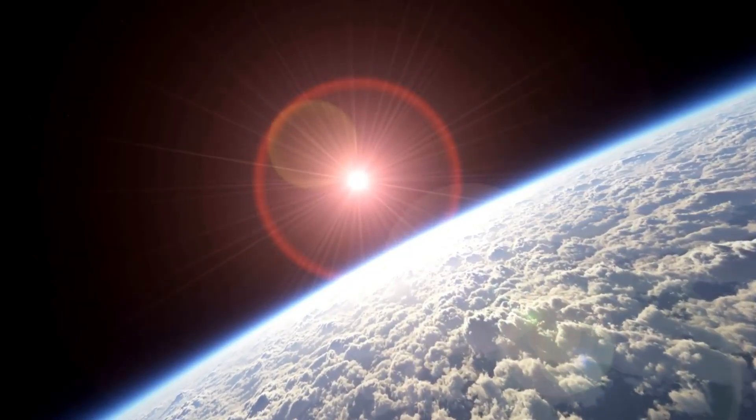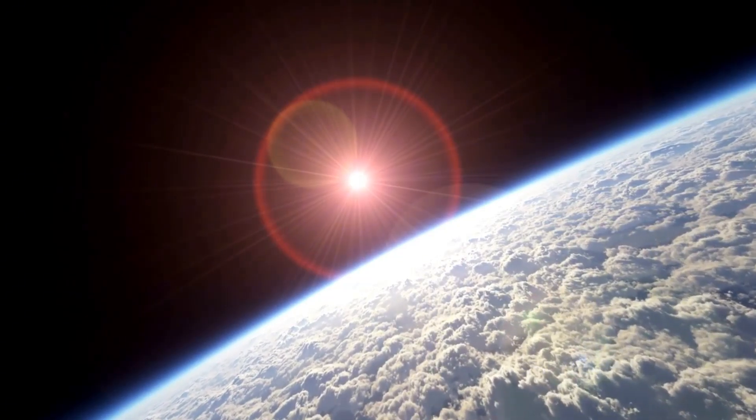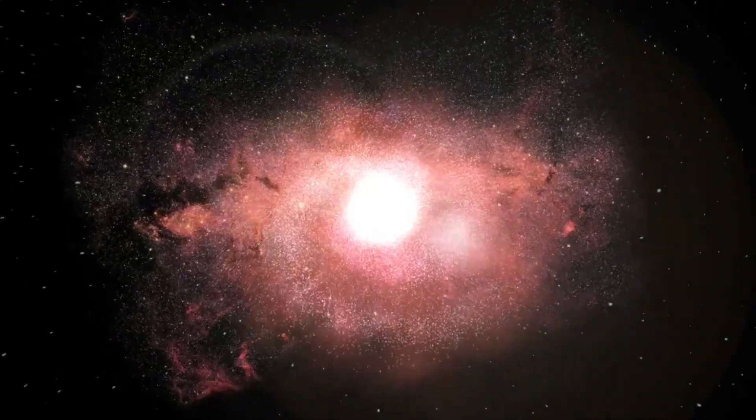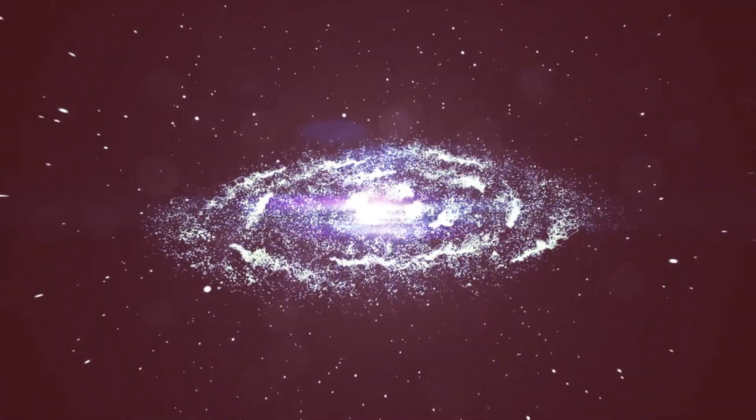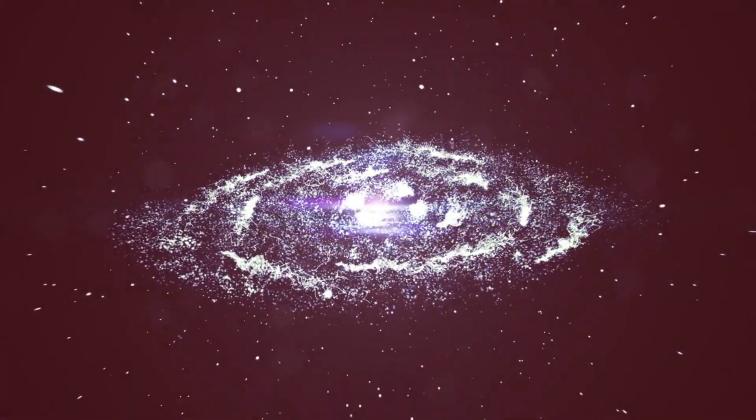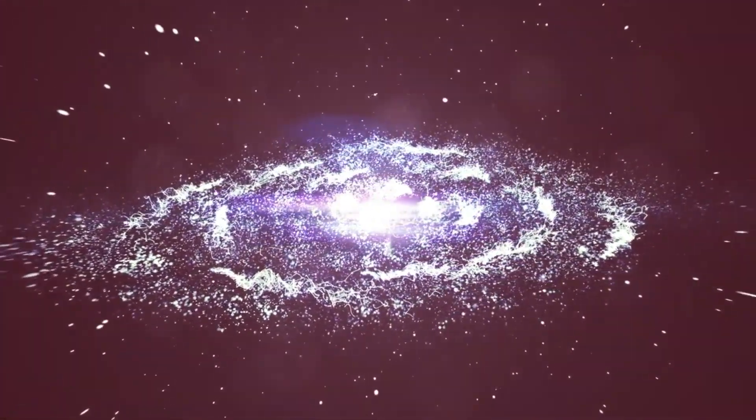In an unexpected turn of events, the James Webb Space Telescope from NASA has made a groundbreaking discovery that has stunned astronomers worldwide. Just a few weeks ago, the telescope unveiled the earliest known galaxy in the universe. But now, it has found something even more remarkable: a supermassive black hole that is rapidly moving away from its home galaxy at an astonishing speed of 4 million miles per hour.